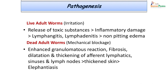When dead adult worms block the lymphatics, this sets up an enhanced granulomatous reaction in the tissues, leading to fibrosis, dilatation, and thickening of the afferent lymphatics. This is how the chronic and slowly progressive thickening of the skin takes place, which we call elephantiasis or hydrocele.